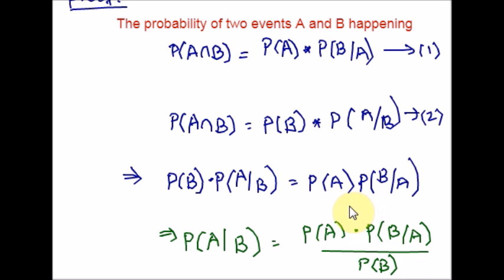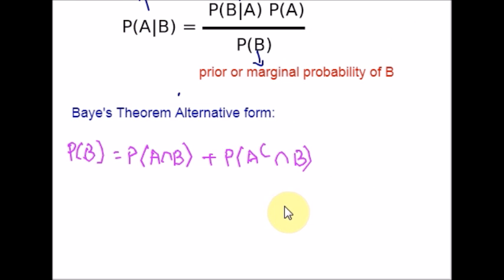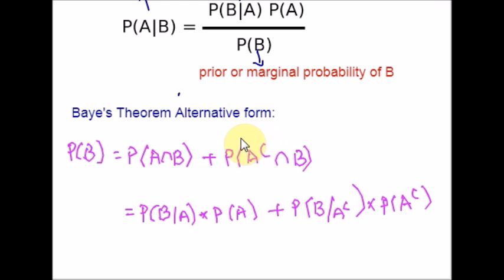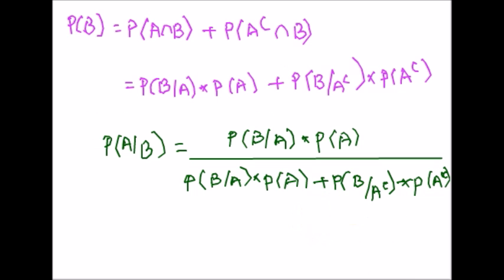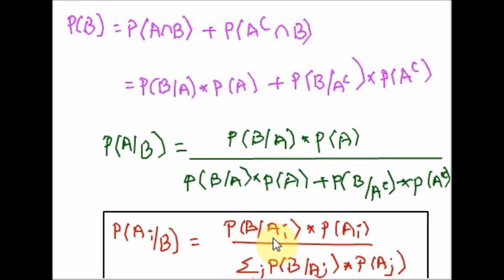Bayes' theorem can also be restated in an alternative form. Bayes' theorem is often embellished by noting that probability of B equals probability of A intersection B plus probability of A-complement intersection B. Using the conditional probability formula, and noting that A-complement (A raised to C) is the complementary event of A, or 'not A', the theorem can be restated in this alternative form. The generalized form is where A_i forms a partition of the event space, and for any A_i in the partition, this gives the generalized form of Bayes' theorem.